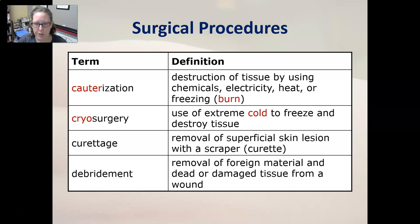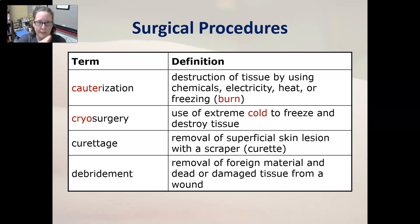Curettage is the removal of superficial skin lesions with a scraper also known as a curette. Debridement is the removal of foreign material from dead or damaged tissue in a wound — for example, if someone got into a motorcycle wreck and has road particles and dirt embedded in their road rash, all of that must be removed for the wound to heal.